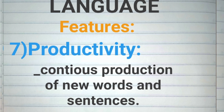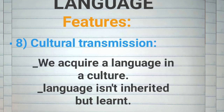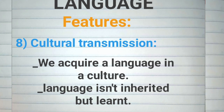Number seven, productivity — language is evolving, allowing us to continuously create new utterances by combining the building blocks of language in ever new ways. Number eight, cultural transmission — we don't inherit language but we acquire it. Our native language is acquired, but other foreign languages are learned. Language passes from one generation to the next; that is cultural transmission.